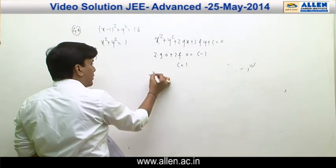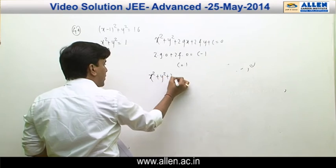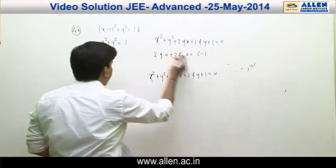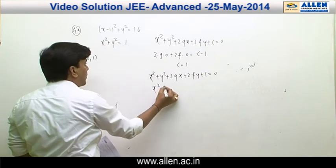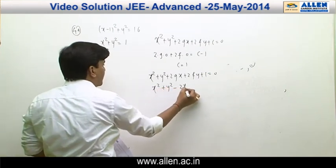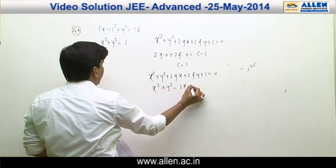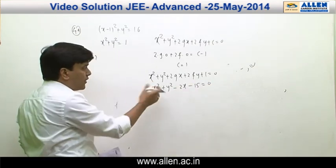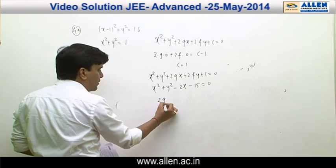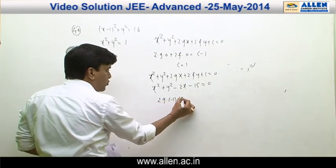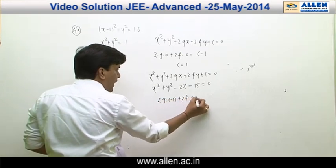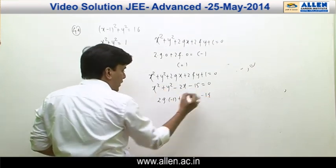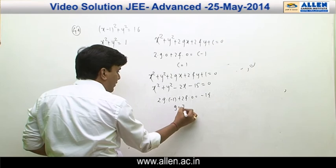The circle is now x² + y² + 2gx + 2fy + 1 = 0. Applying the orthogonality condition with x² + y² − 2x − 15 = 0, we get 2g(−1) + 2f(0) = 1 + (−15) = −14. Hence g = 7.